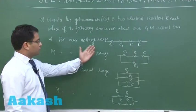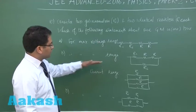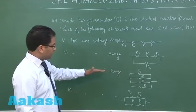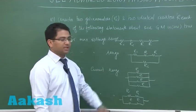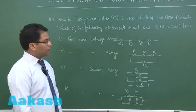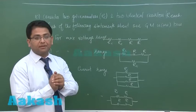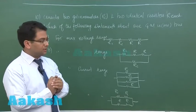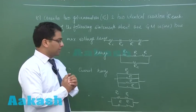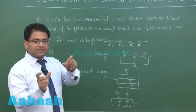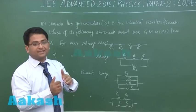For maximum voltage range that's a combination. For maximum voltage range and for current range these are the combinations. For maximum voltage range the resistors in series should be maximum for a given galvanometer, and for maximum current range the resistors in parallel should be as less as possible.